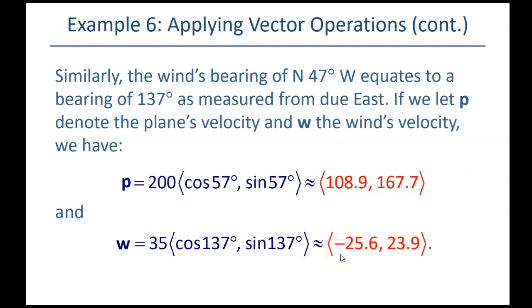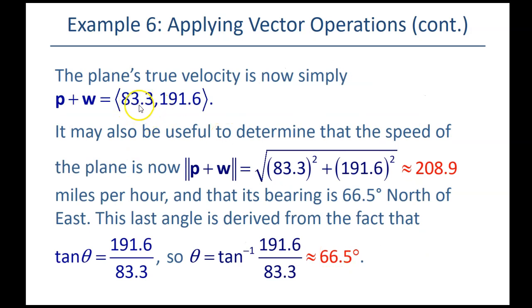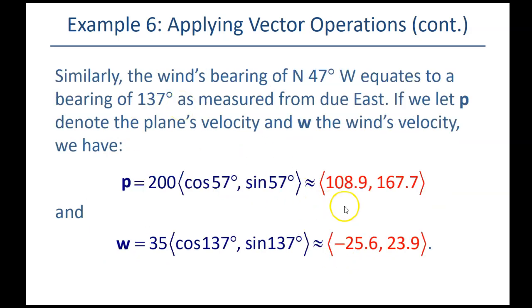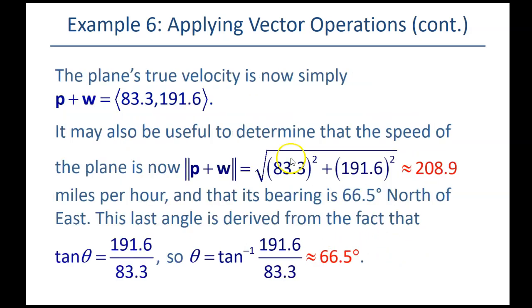So, when we add these together, we get these two numbers. Again, the 83 is coming from adding these two. That one is negative. If we add these two, we get that one, 91.6. So, this is the velocity of the plane with the wind component thrown in there. And then to get the magnitude, we just get the speed, the true speed of the plane with the wind being factored in. It's not 200 anymore. It's almost 209.